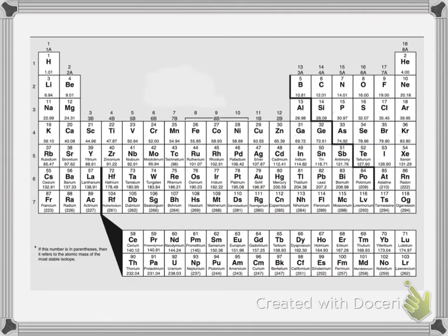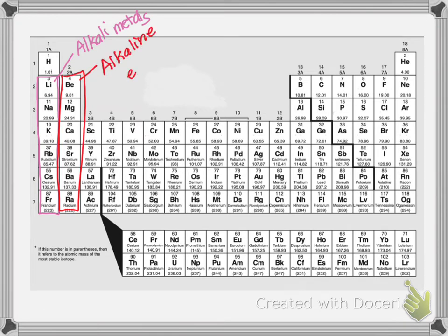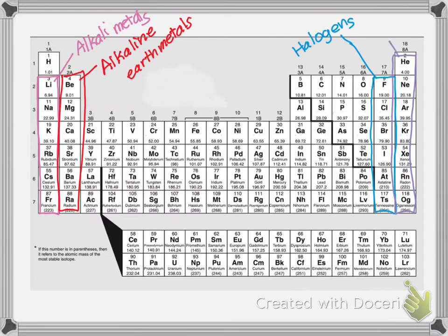Here's a periodic table to label these groups on. Group 1A — all of the elements here (excluding hydrogen) are part of the alkali metals. Group 2A, the whole column, are all part of the alkaline earth metals. On the other side of the periodic table, group 7A are all part of the halogens. And group 8A — the last column — are all part of the noble gases.